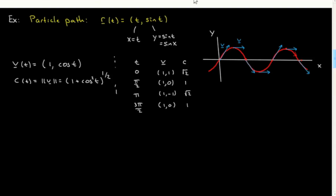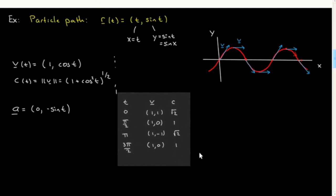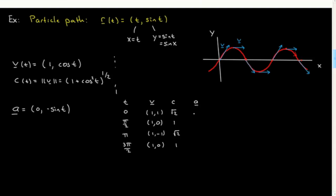Let's continue and do the acceleration. The acceleration is the derivative of the velocity vector, which gives (0, -sin t). Extending the table to include acceleration: at t=0 it's (0, 0); at t=π/2 it's (0, -1); at t=π it's (0, 0); at t=3π/2 it's (0, +1). The acceleration is zero at the zero crossings, downwards with length 1 at the top, and upwards at the trough.